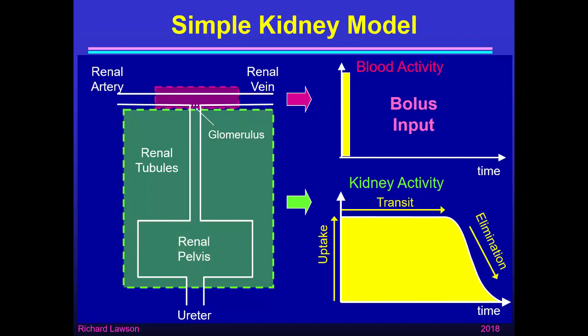This simple kidney model says that from a bolus input in the blood, we get a kidney activity that rises, shows constant activity during the transit, and then falls. We call that the impulse response — the response of the kidney to this impulse or bolus input. That's what this simple kidney model predicts.